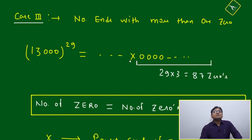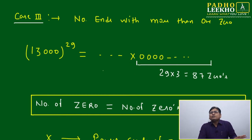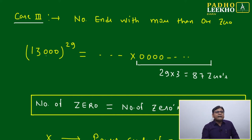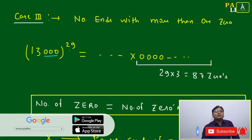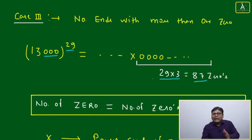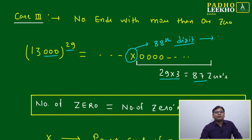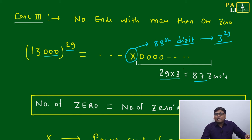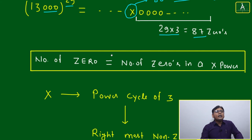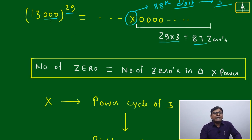Case 3: number ends with more than one zero — two, three, or even ten or twenty zeros. The rule remains the same. For example, 13000 to the power 29: you multiply the number of zeros in A (which is 3) by the power (29), giving 87 zeros from the right-hand side. The 88th digit will depend on the power cycle of the unit digit of the non-zero part — here, 3 to the power 29. The rule: number of zeros = number of zeros in A multiplied by the power.